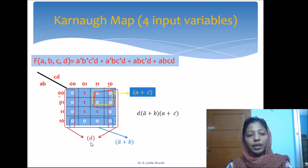The final simplified expression will be d × (ā+b) × (a+c̄). This is the simplified expression of this boolean function in product of sum.